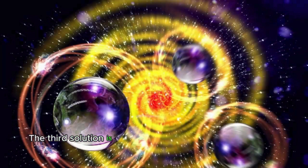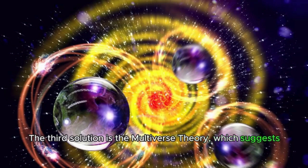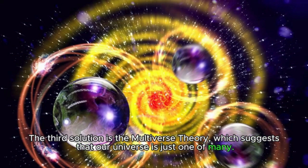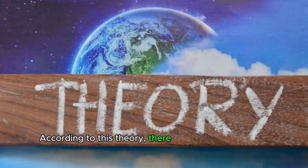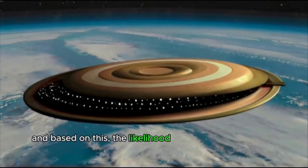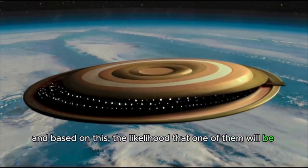The third solution is the multiverse theory, which suggests that our universe is just one of many. According to this theory, there are a large number of universes. And based on this, the likelihood that one of them will be flat is much higher than if there was only one universe.